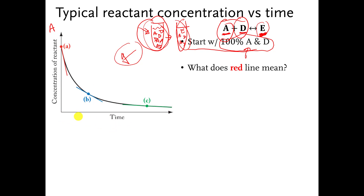You can measure the speed of A disappearing at different times. If you measure the speed of A disappearing at the very beginning, the way you can do it is by measuring how steep this line is. This line is pretty steep compared to the others, so at the very beginning the rate of A disappearing is pretty steep. After a little while, the rate is not as steep. A little while longer, A is still disappearing, but the slope or steepness of that line is not as much.